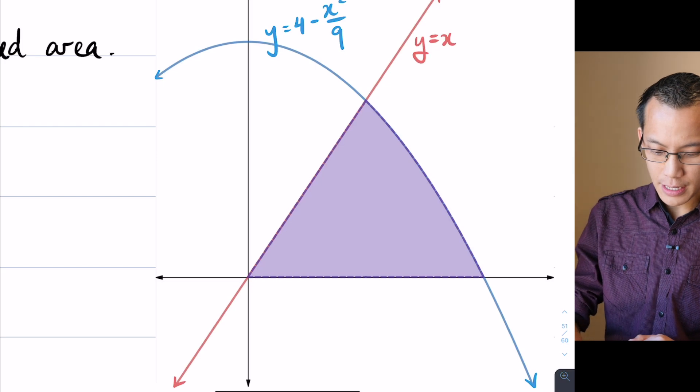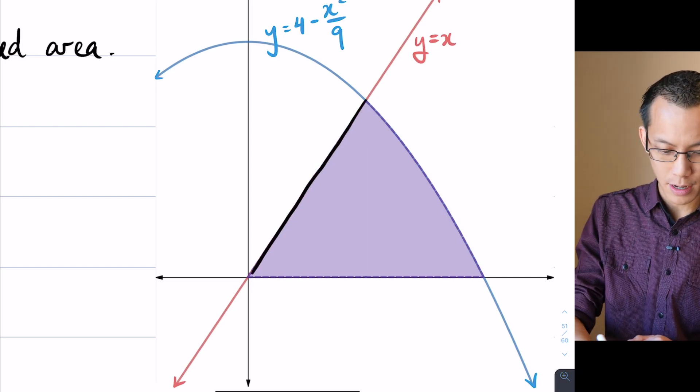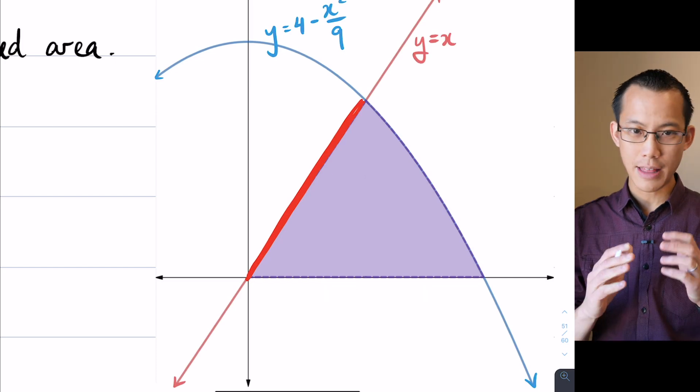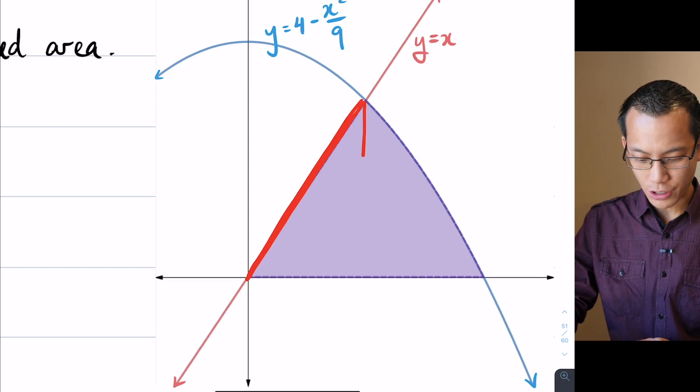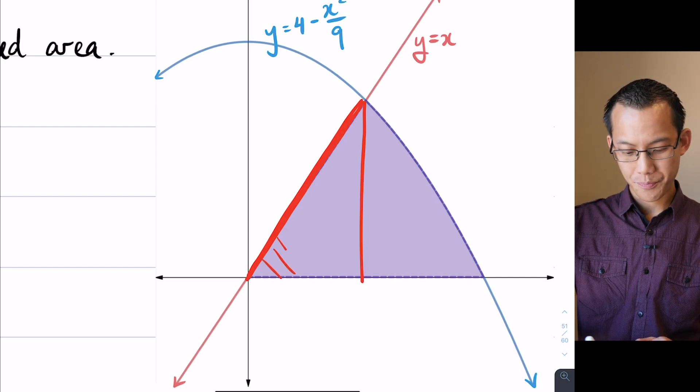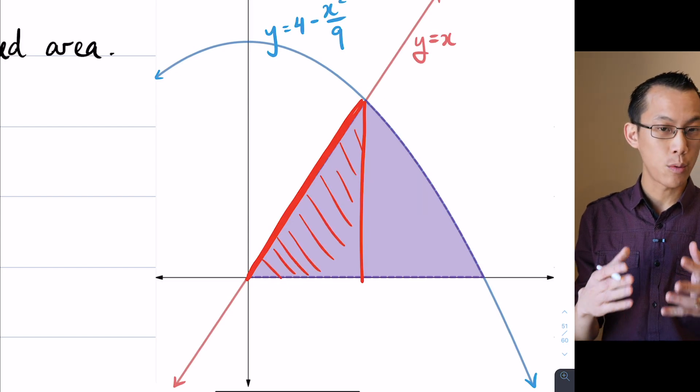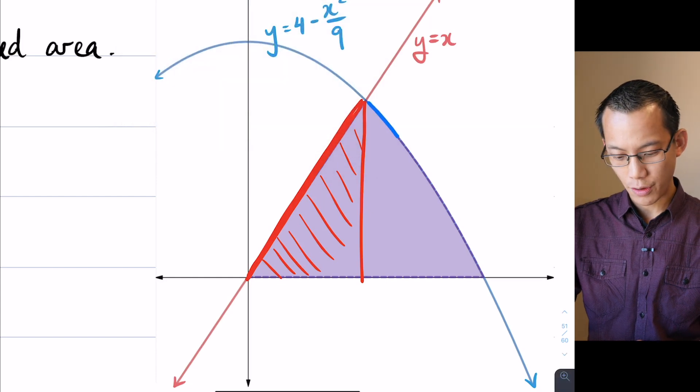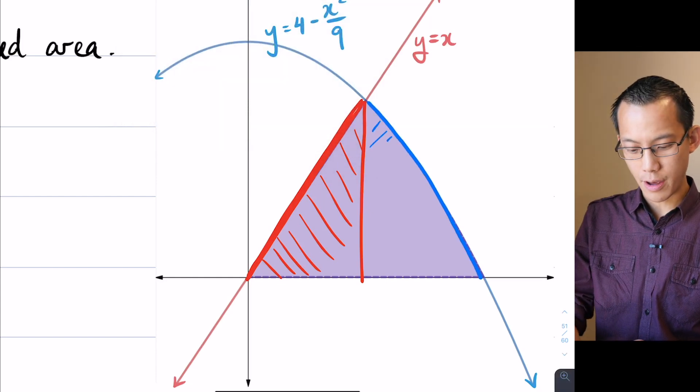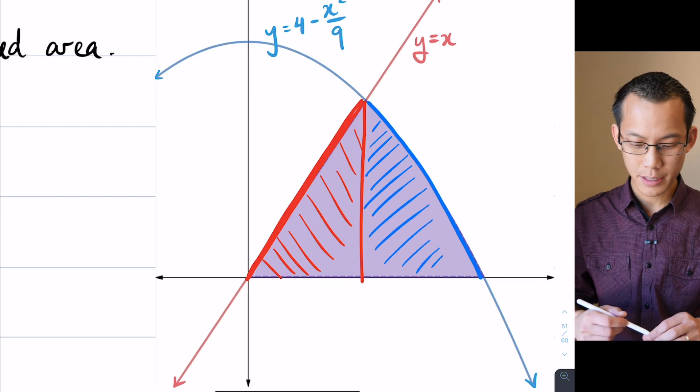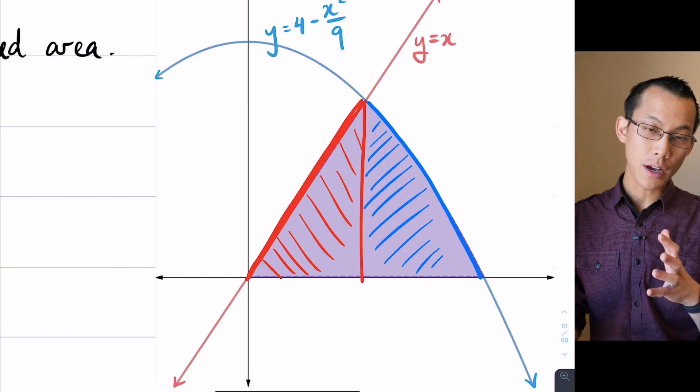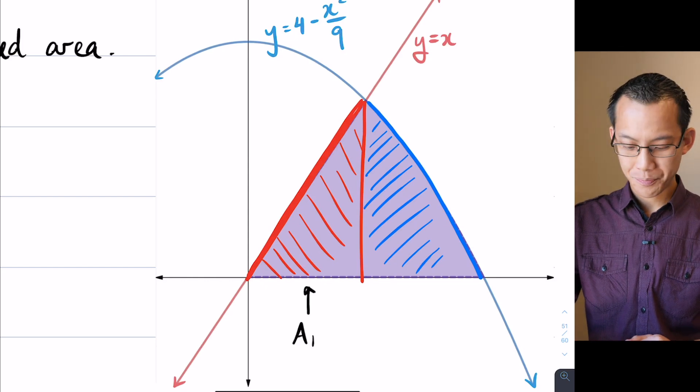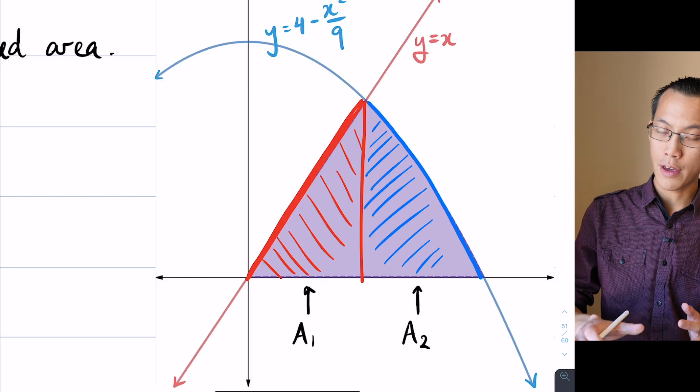Now, in order to find this shaded area, even though it's all together in one piece, it actually is a compound region, a composite figure, if you like, in disguise. Because there isn't one nice integral that you can write that gives you that entire area. This area that you can see here is not underneath a curve, it's underneath multiple curves. So our strategy here is to work out, well, let's take one piece at a time and work out each individually. So for now, if you've got a rough sketch of this, and if you can't quite read it there, by the way, it's y equals x and then y equals 4 minus x squared on 9.